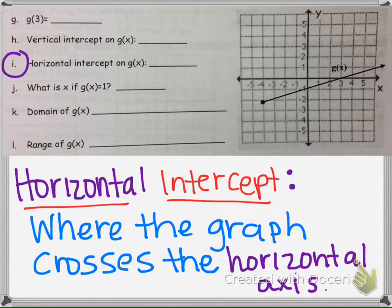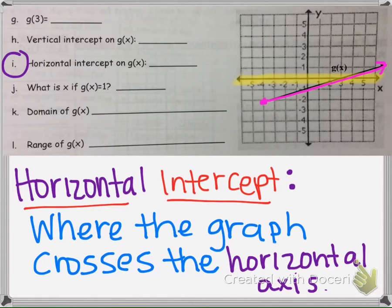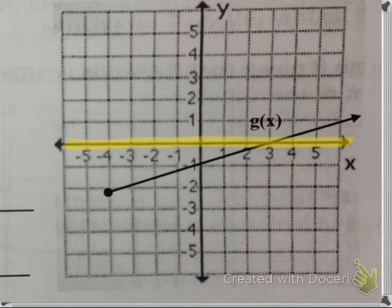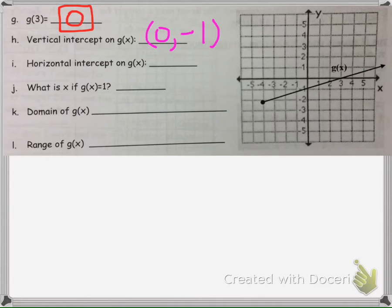Next we're asked to find the horizontal intercept. Here's the horizontal axis — we want to know where does this pink graph cross this yellow horizontal axis. Instead of horizontal axis, we could think of it as the x axis, since we're using x and y on this particular graph. It crosses right here, and that point is (3, 0). So we would put (3, 0).